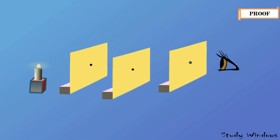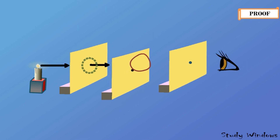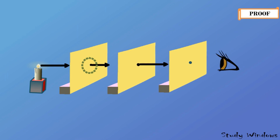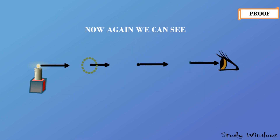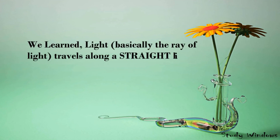The light comes through the first, second, and third cardboard holes and then reaches our eyes. But if we move any one of the cardboards, we cannot see the candle, because light from the candle passes through the first cardboard but at the second cardboard there is no hole aligned, so light cannot cross it and cannot reach our eyes. If we move the cardboard back to its earlier position, we can see the candle again. If we draw an imaginary line from the candle to our eyes, it is a straight line passing through all the holes — proving that light travels along a straight line.